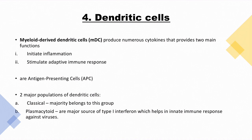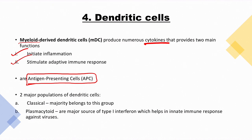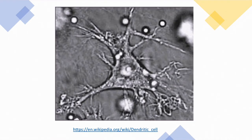Dendritic cells are myeloid-derived cells that produce numerous cytokines. They have two functions: to initiate inflammation and to stimulate the adaptive immune response. They are antigen-presenting cells (APCs) — high yield: APCs include dendritic cells, macrophages, and B cells. Two major populations of dendritic cells are classical and plasmacytoid. Plasmacytoid cells are a major source of type 1 interferon, which helps fight against viruses.